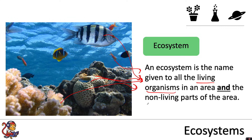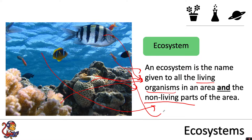And you'd also need to look at the non-living parts of the area as well. So at an ecosystem level, we'd also be looking at the water and we'd be looking at the rocks. We could be interested in the size of the rocks in that area, or the temperature of the water, or how salty the water is, which we call salinity.